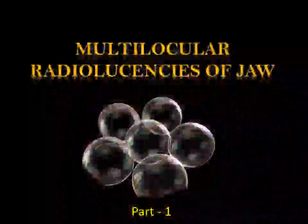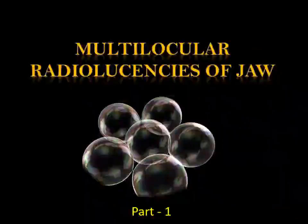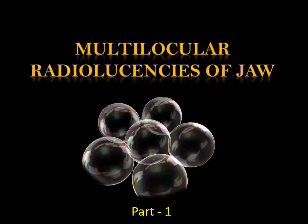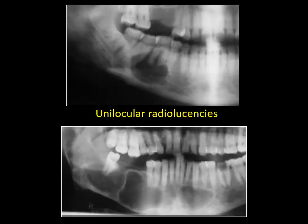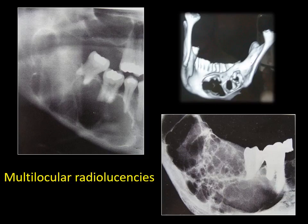Hello everyone. The topic for this presentation is multilocular radiolucency of the jaws. Multilocular radiolucency is a pattern which is frequently used terminology to describe the radiographic image. You can have a multilocular radiolucency and a unilocular radiolucency. Unilocular means you have a single radiolucent area. Multilocular means you have multiple radiolucent areas separated by thin septa. This specimen shows multilocular radiolucency with multiple compartments separated by multiple septa.